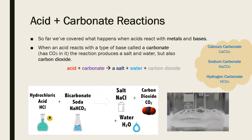So far we've covered what happens when acids react with metals and with bases. Our third and last acid reaction looks at what happens when we add an acid to a carbonate. When an acid reacts with a carbonate, the reaction produces salt and water as it would with an acid-base reaction, but because it's a carbonate it also produces carbon dioxide — usually in the form of bubbles, which is how you can tell this reaction is occurring.